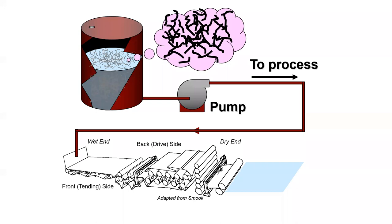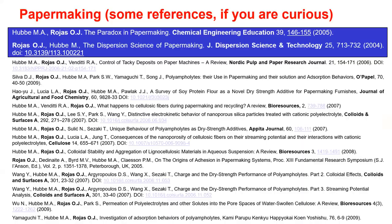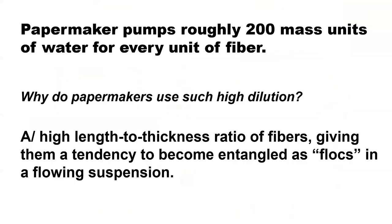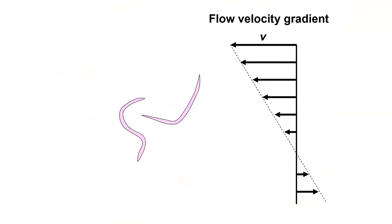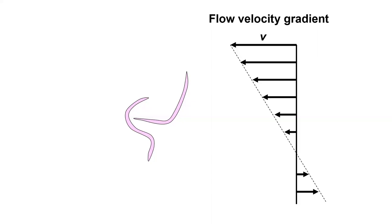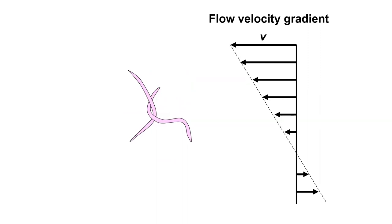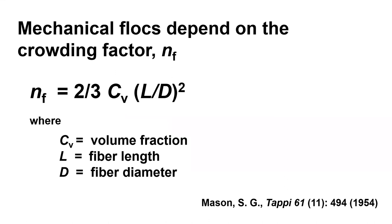Flocculation happens here in the head box — fibers start to flocculate and they need to flocculate so that water drains faster and for them to find each other and bond. But if this flocculation is not controlled, we will be in trouble with non-uniform paper. This is a critical balance — you want to flocculate the fibers, but very uniformly. This is called micro flocculation. Historically, at PPC, Dick Kerekes worked a lot in the area of hydrodynamics of fibers — he's a legend. In this flocculation, there is something called crowding factor — which depends on the length and diameter of the fibers. The longer the fibers, the higher the crowding factor and the higher the tendency for fibers to find each other and flocculate.